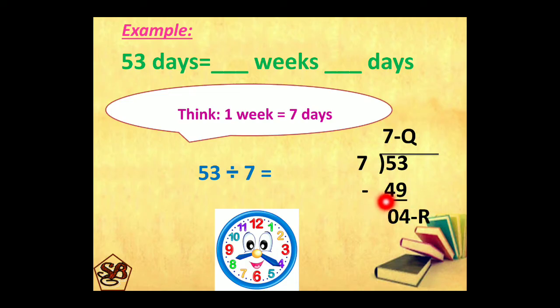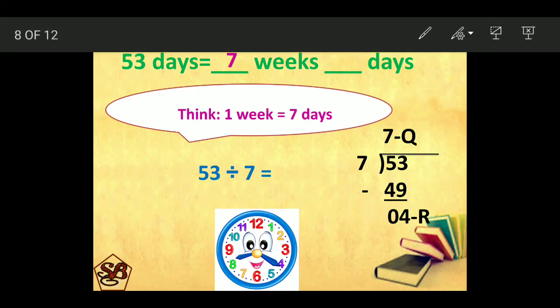quotient, as I told you in previous video also, will always become the bigger unit in conversions. And remainder will always become the smaller unit in conversions. That means here we are converting into weeks and days. So, quotient 7 will be weeks and 4 will be days. That means 53 days is equal to 7 weeks and 4 days.